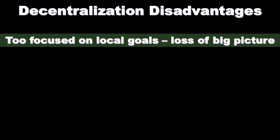One disadvantage of decentralization is that divisional managers could become too focused on local goals rather than the big picture vision of the company, and therefore do things that are harmful to the overall vision in order to achieve local goals. Departments know they're being measured on their own goals, not necessarily on how much they contribute to the overarching vision.